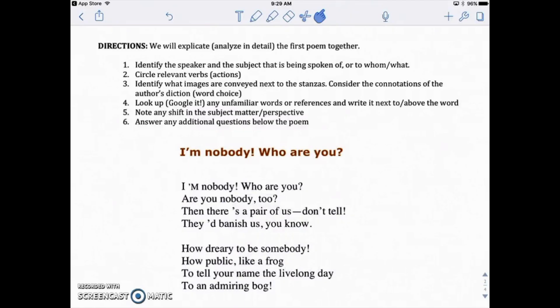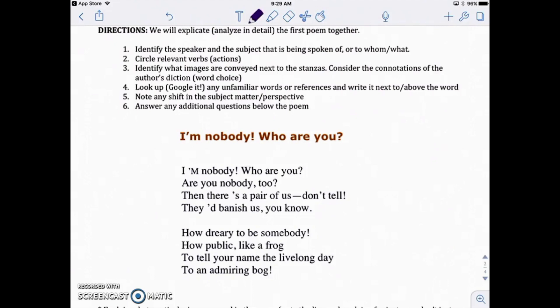Okay. So if you're on the second page of your packet, then you should see something that looks like what I have on my screen here. Okay. We're going to explicate, which means we're going to analyze in detail the first poem together. It's called I'm Nobody, Who Are You? In order to explicate the poem, we're going to follow six steps. And you can see those six steps right here. Right here. Okay. Let's start with step number one. It says identify the speaker and the subject that is being spoken of or to whom or what. So let's go ahead and start by reading through this poem. It's not very long, as you can see.